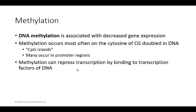DNA methylation is typically associated with decreased gene expression. When you have regions of Cs and Gs — particularly the cytosine — methylation can happen there. This often occurs at CpG islands, many of which are within promoter regions. If methylation is present, it can literally block transcription factors and RNA polymerase from binding to the promoter region. It can also repress transcription by blocking the path so that RNA polymerase cannot come in.